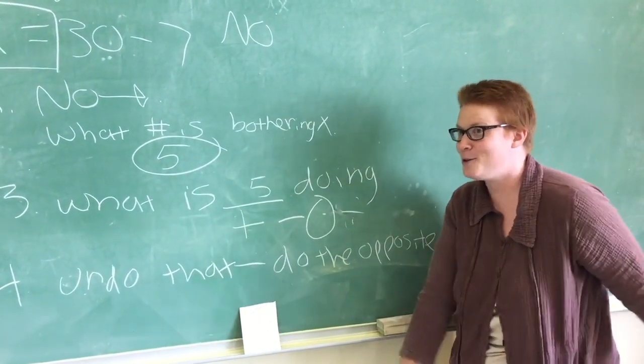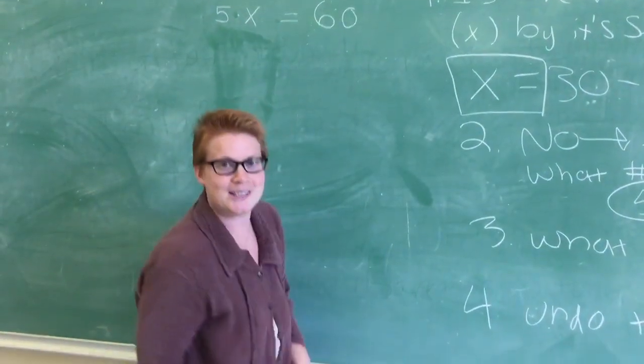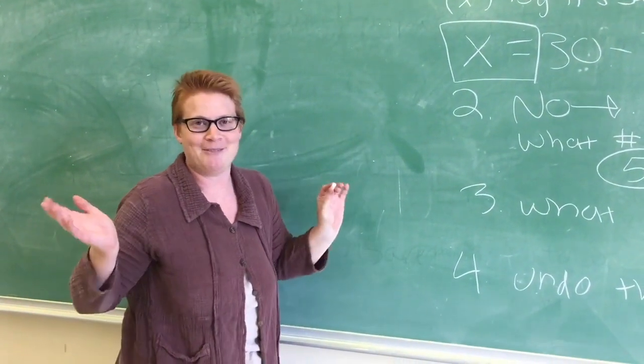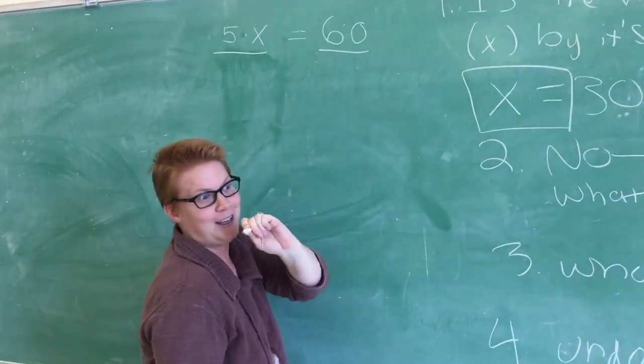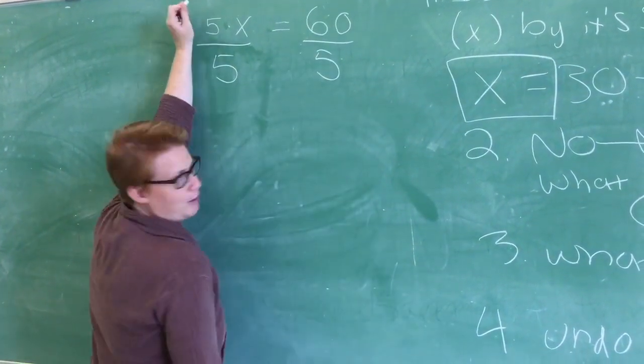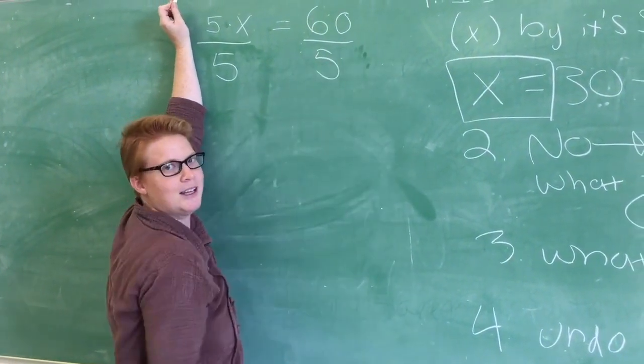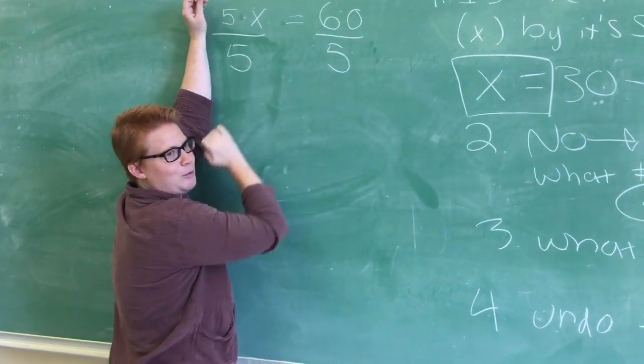So we must undo any multiplication. The opposite of multiplication is division, which in the happy lid algebra, we represent by division bars. I am dividing by 5, because that's the number that's bothering x. Who cares about 60? No one cares about 60. He's over here in number land. This is x land.